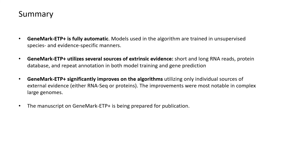In summary, GeneMark ETP+ is fully automatic — that is, species- and evidence-specific models used in the algorithm are trained in an unsupervised manner. Secondly, it utilizes several common sources of extrinsic evidence: short and long RNA reads, a protein database, and repeat annotation in both model training and gene prediction. Finally, it significantly improves on algorithms using only individual evidence sources, with these improvements being most notable in complex, large genomes.